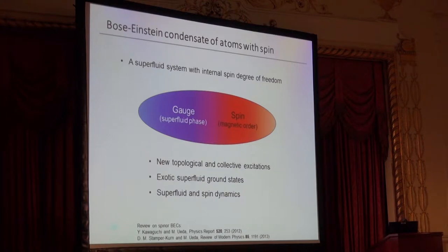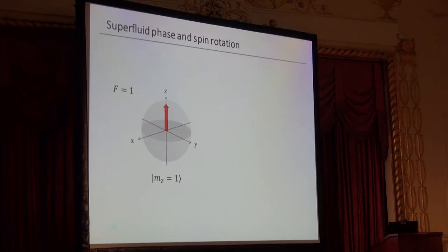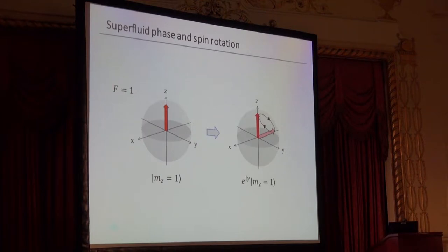One of the most intriguing aspects of this system is the very close relation between the gauge symmetry and the spin symmetry of the system. I want to illustrate that with the following example. We have a |1, +1⟩ spin state, and let's make some rotation of this spin. Spin is making a rotation and moves back to where it was. Now we have a |1, +1⟩ spin state again, but with an additional quantum mechanical phase — the Berry phase. Obviously, spin rotation can affect the superfluid phase in this way.